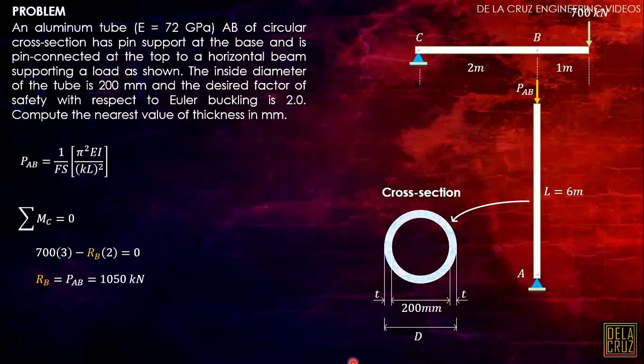Meaning, we will get the inertia, and from that inertia, we will express it into the thickness of the cross-section. So substitute, let's use formula 1. So P_AB is 1050 kilonewtons, convert it to newtons. 1 over FS, which is 2.0. Our E converted to megapascal is 72 times 10 raised to 3, then the inertia, then kL, k is 1.0 and the length, convert it to millimeters, 6000 millimeters quantity squared.